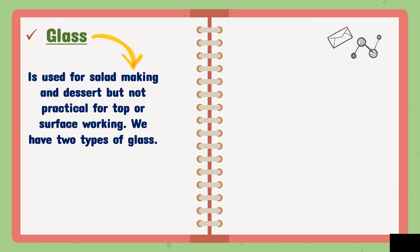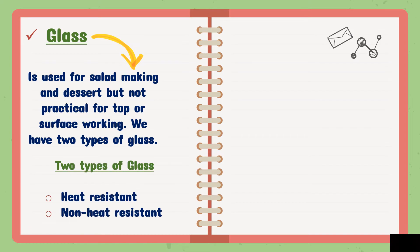Number three is glass. It is used for salad making and dessert, but not practical for top or surface working. We have two types of glass: heat resistant and non-heat resistant. Heat resistant glass can be placed in the oven or microwave — for baking macaroni or cassava. Non-heat resistant includes drinking glasses and plates that cannot be placed in ovens or microwave ovens.